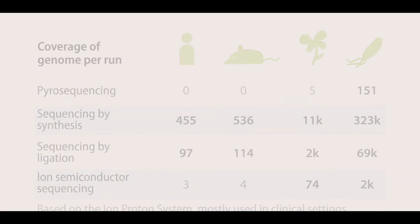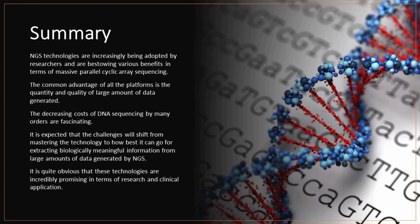In conclusion, NGS technologies are increasingly being adopted by researchers and are bestowing various benefits in terms of massive parallel cyclic array sequencing. The common advantage of all the platforms is the quantity and quality of large amount of data generated. The decreasing costs of DNA sequencing by many orders are fascinating. Given the current status of certain challenges associated with NGS, it is anticipated that NGS technologies will become as widespread as microarray.